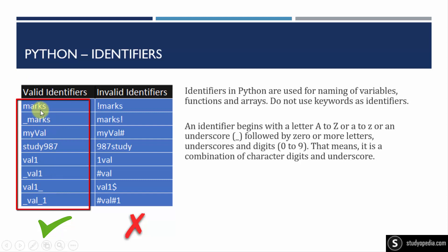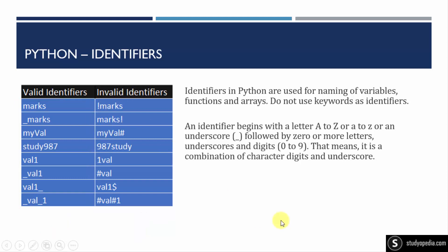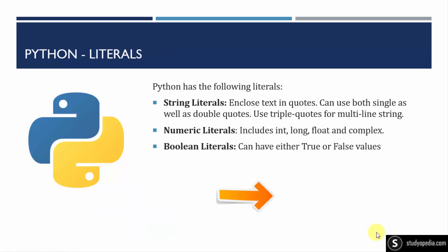For example, marks, underscore_marks — it can begin with an underscore. It can use letters as well as digits, like study987. These are invalid identifiers: an identifier cannot have a special character like the ones shown, and it cannot start with a digit. So those are invalid identifiers.